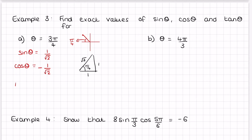Tan θ is opposite over adjacent, which is 1/1 = 1, but tan is also negative in that quadrant, so tan θ = −1. Alternatively, using sine over cos: (1/√2) ÷ (−1/√2) also gives −1.